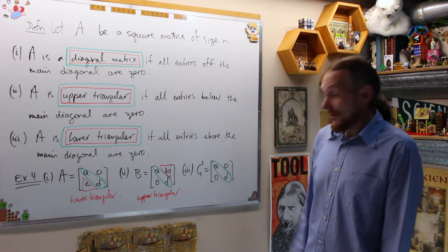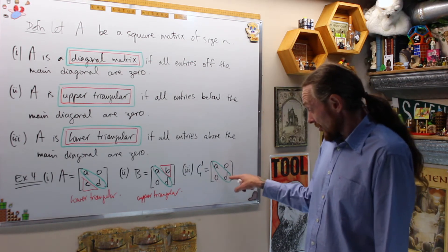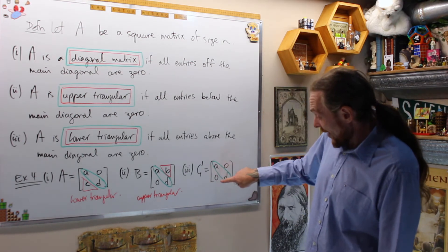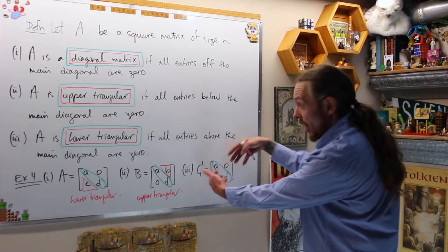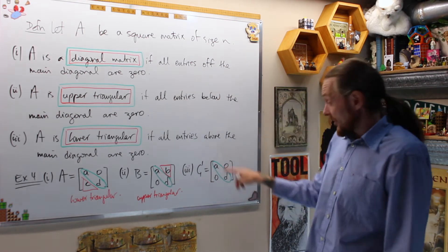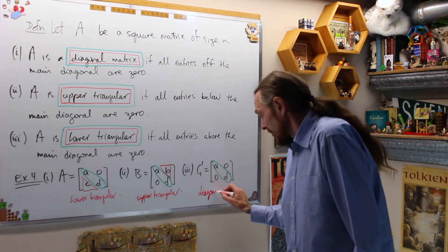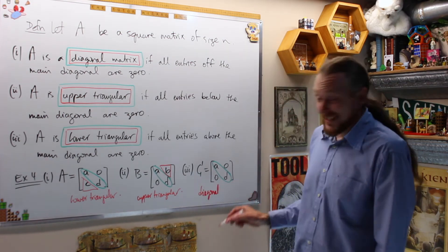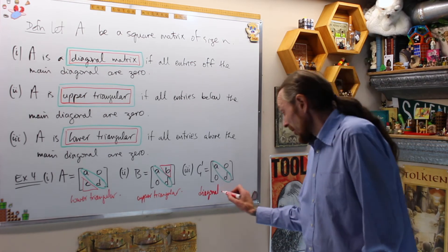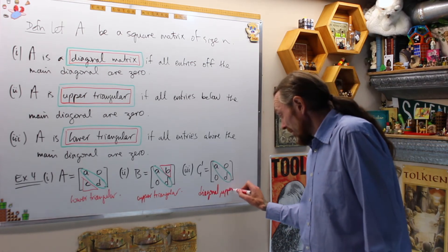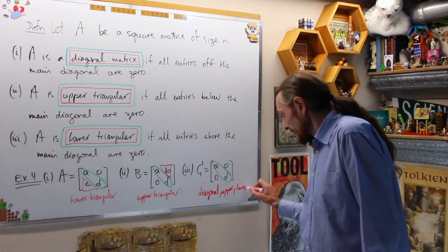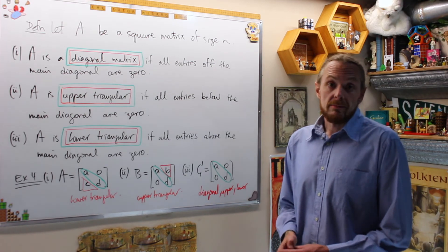And finally, we have this matrix [a, 0, 0, d]. Everything above and below the main diagonal or everything off of the main diagonal are 0. And that means that this is a diagonal matrix. And coincidentally, a diagonal matrix is both upper and lower. So it is upper triangular and lower.